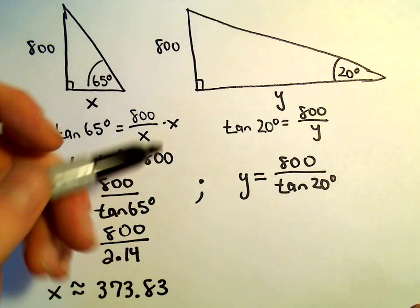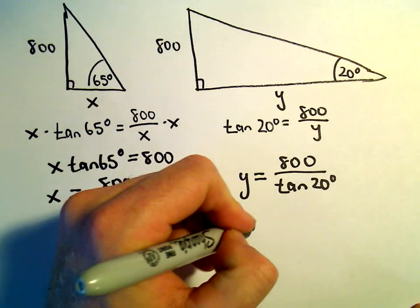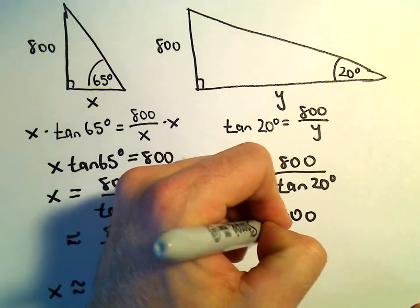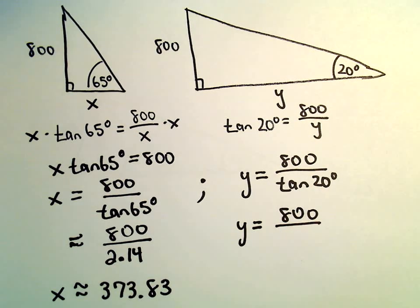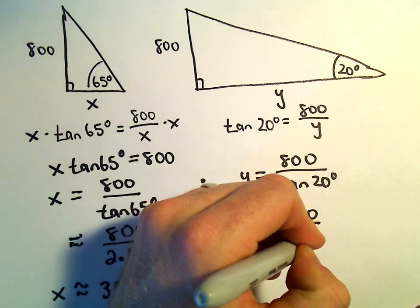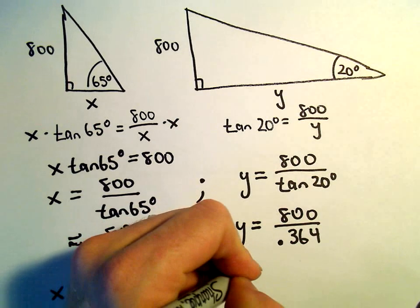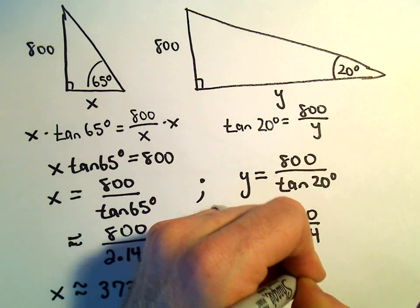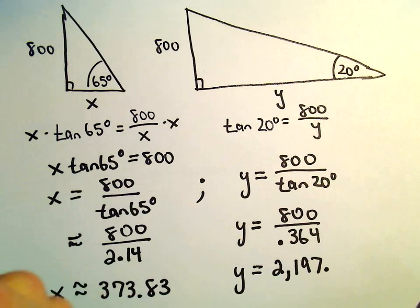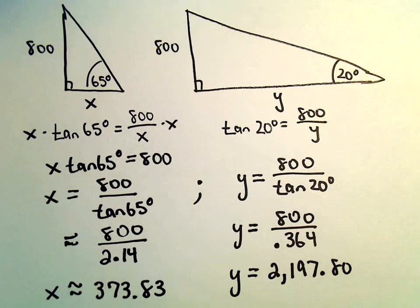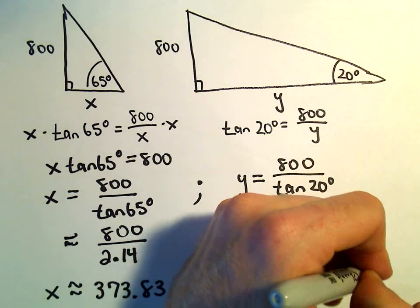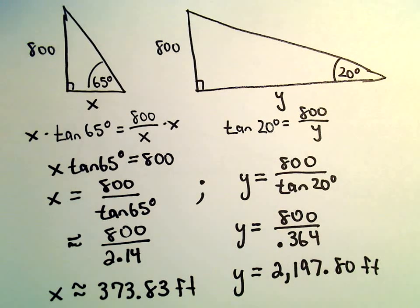If we look at the other one, we find our value for y, so we'll take tangent of 20 degrees. Tangent of 20 degrees, I'm getting that to be roughly 0.364 after rounding. So 800 divided by 0.364, I'm getting that to be 2,197.80, and everything I believe was in feet, so let's go ahead and stick our units on there. Both of these distances are in feet.